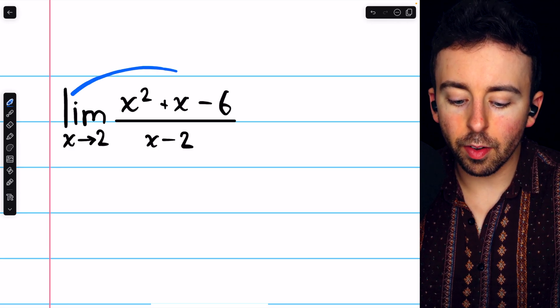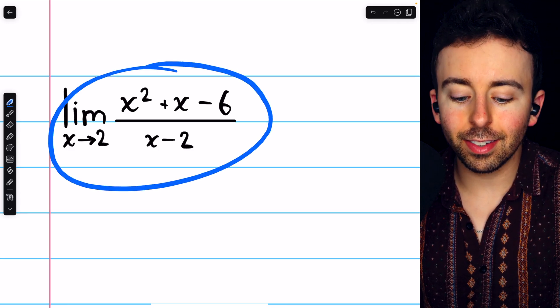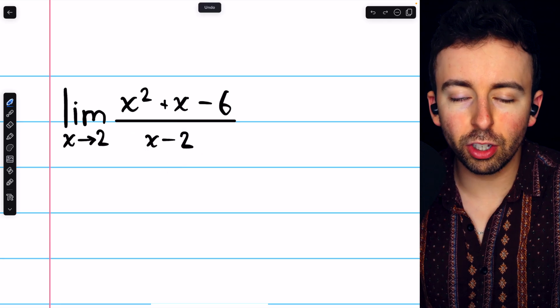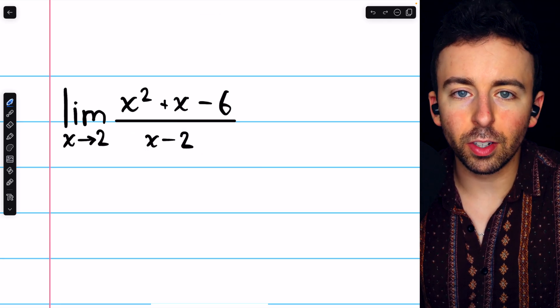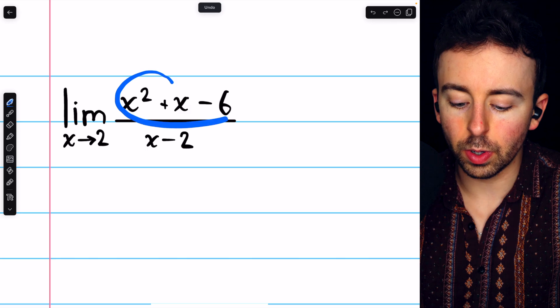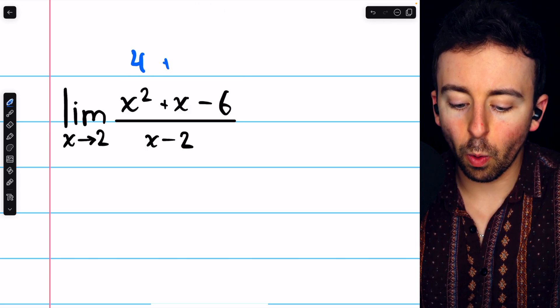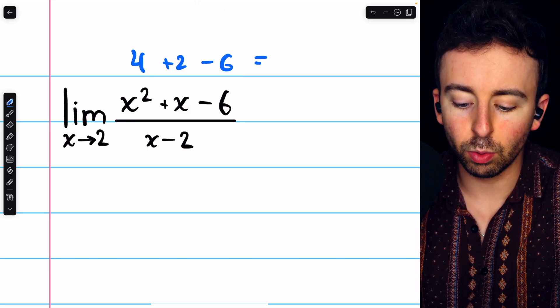We can't evaluate the limit of x squared plus x minus 6 all over x minus 2 directly by substitution. If we try to plug x equals 2 into the numerator, we get 4 plus 2 minus 6, which is 0.